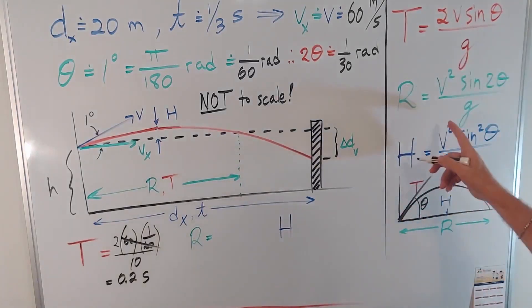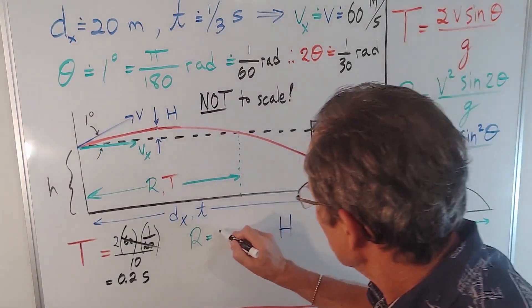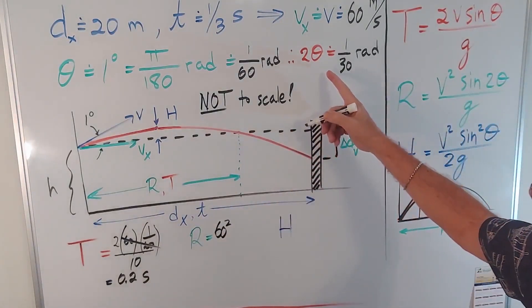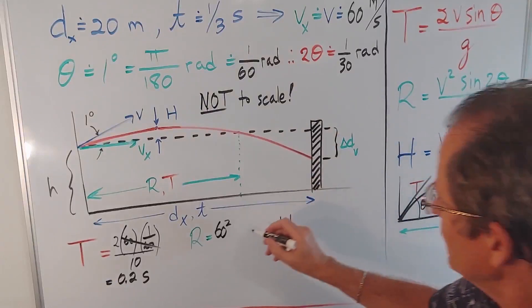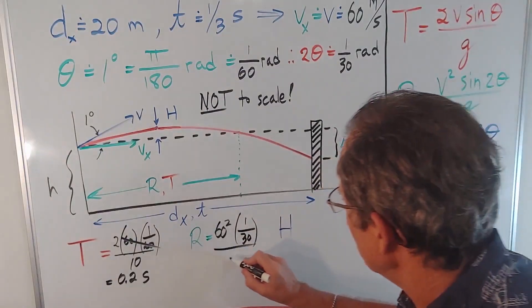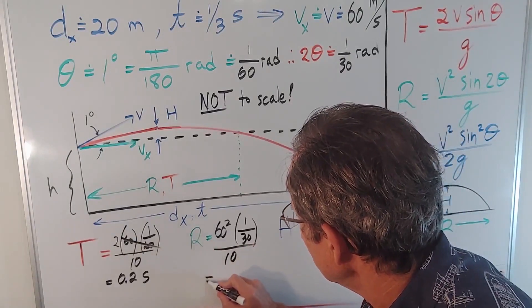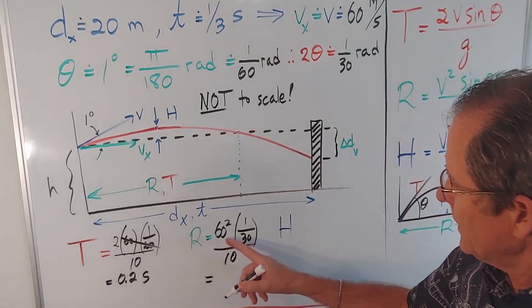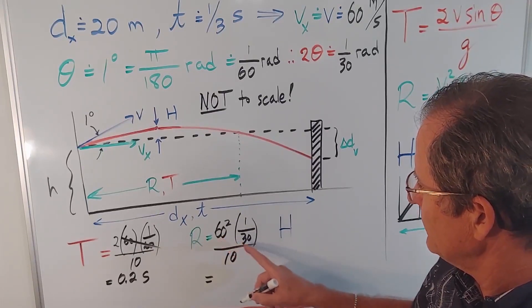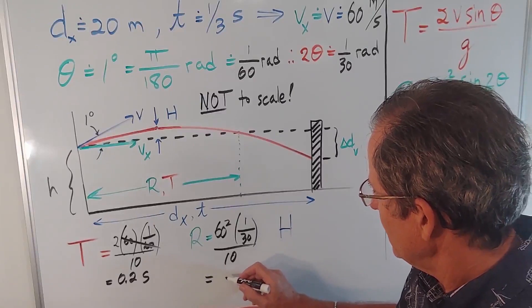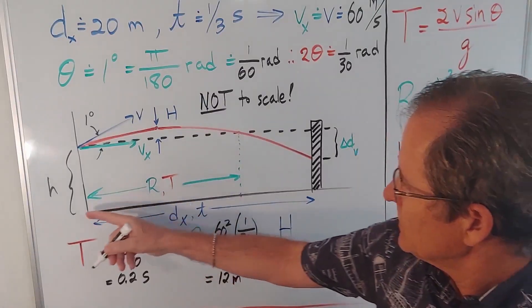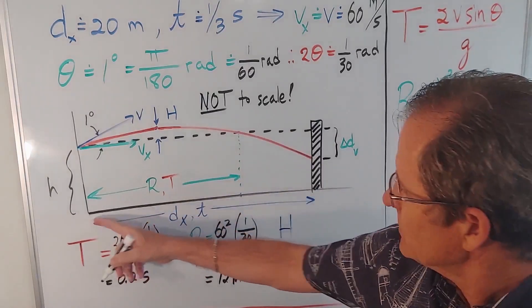The range is this formula. So 60 squared times the sin of 2θ, which is 2θ 1/30, the 30th of a radian, divided by 10 again. So this 30 will cancel one of the 60s, leaving it with 60 times 2 from that cancellation. 120 over 10, that's about 12 meters. So if this was 20 meters, that's 12.